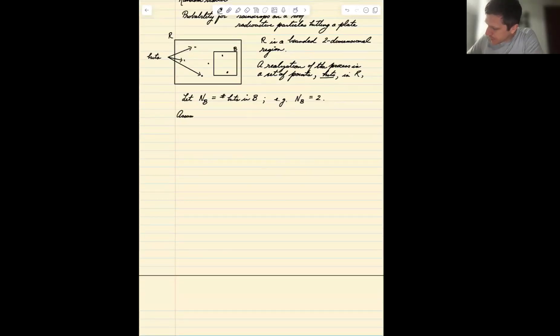First we need to make some further assumptions. One assumption is that there are only finitely many hits. So if we put a probability on the number of hits in the region R, the number of hits in the region is finite with probability one.